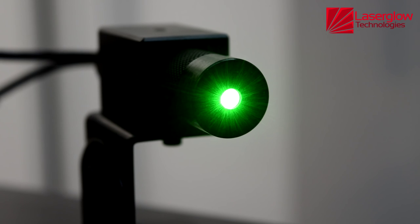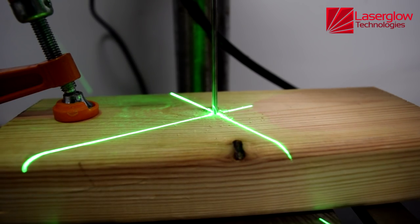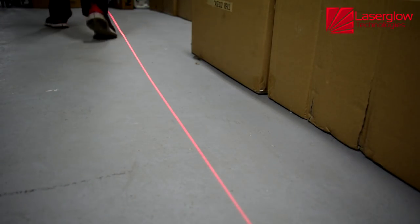You can find LaserGlo's Brightline lasers in factories and labs around the world, guiding the alignment of large and small objects, visualizing cut lines as illumination sources for machine vision, and as warning indicators for hazardous areas.